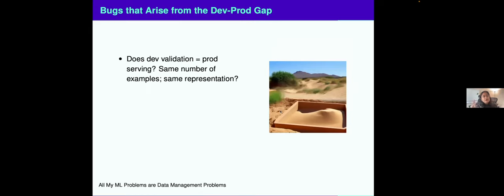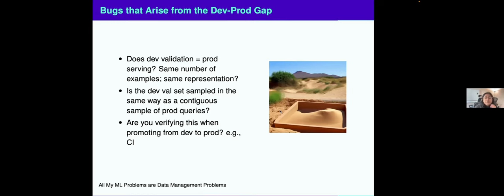And then finally, bugs that arise from the dev-prod gap. This is stuff that I never thought about when I was an ML engineer, but was my validation and development time equivalent to how I served in prod? For this retraining cadence, did my validation set have the same number of examples that I would serve in production, the same representation, same subpopulations? Was my validation set in development time sampled like a contiguous sample of production queries? This was almost never the case at the company that I previously worked at. I almost always saw random train-test splits. This is not the same way that you would monitor performance in production. And finally, are you verifying this when you're promoting from development to production in your CI?